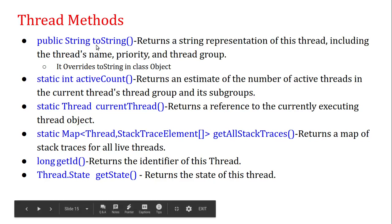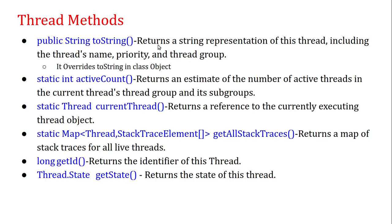public String toString() — this method returns a string representation of this thread, including the thread's name, priority, and thread group. It overrides toString() of the Object class.